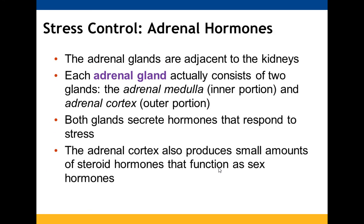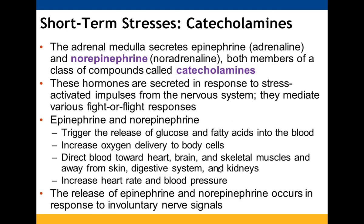Stress control involves adrenal hormones. The adrenal glands are located near the kidneys and have two parts: the medulla and the cortex. They secrete hormones that respond to stress, and the cortex also produces steroid hormones that can function as sex hormones. The adrenal medulla secretes epinephrine and norepinephrine — catecholamines — which deal with short-term stresses and fight-or-flight responses.